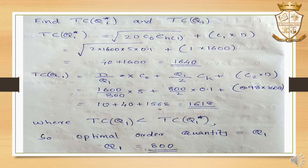Then TC(Q1) is calculated using the normal method: TC(Q1) = (D/Q1)·CO + (Q1/2)·CH2 + C2·D, which equals 1,680. Since TC(Q1) is less than TC(Q1 star), the optimal order quantity is Q1 = 800 units.